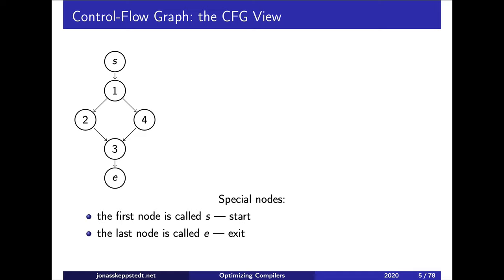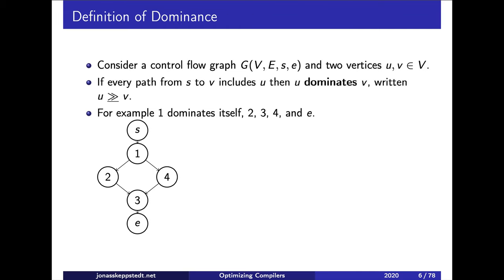The first thing we do when we analyze this graph is to find something called dominance. During this analysis we are not interested in what actually happens inside a node, so we ignore that and just look at this as any directed graph.